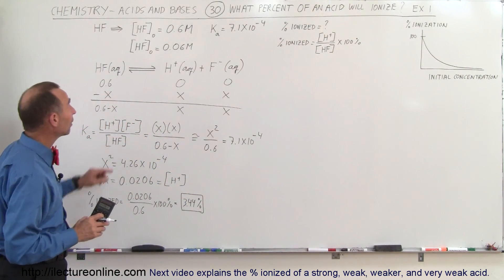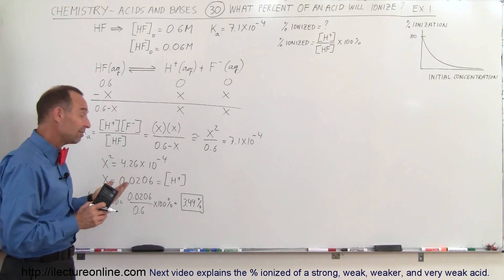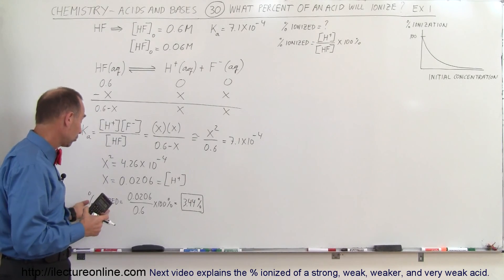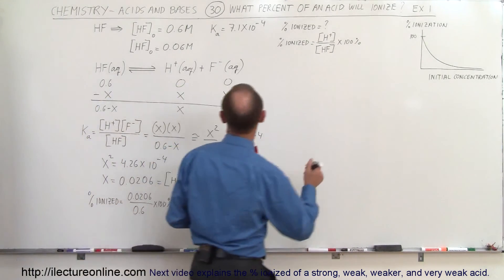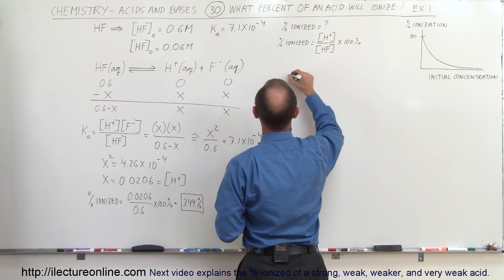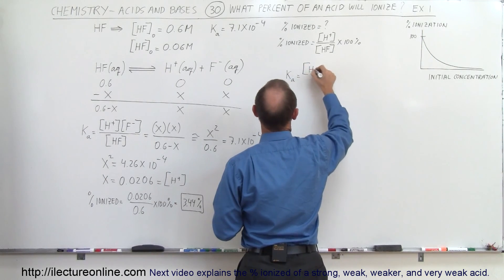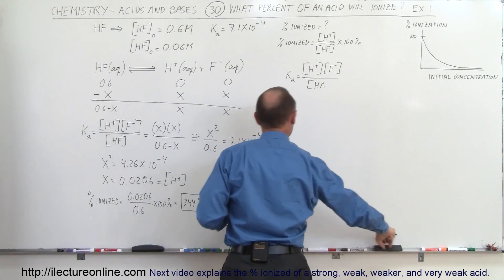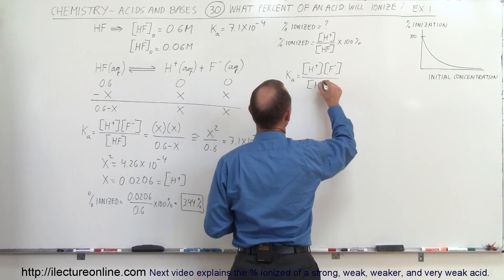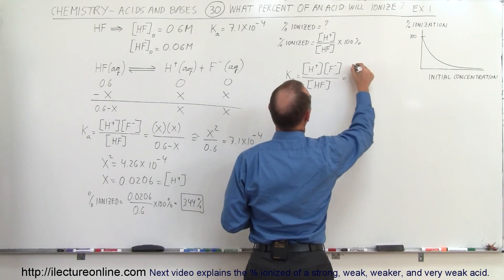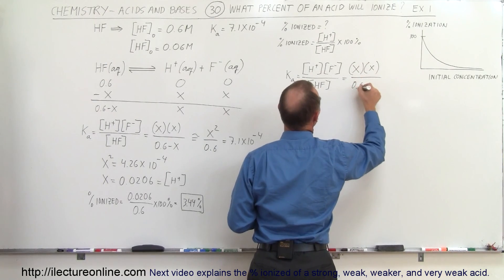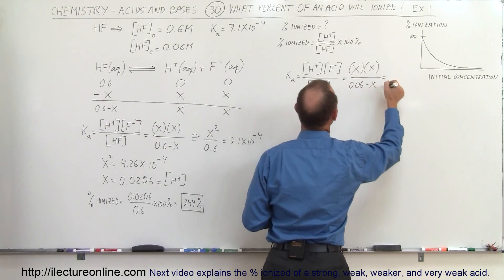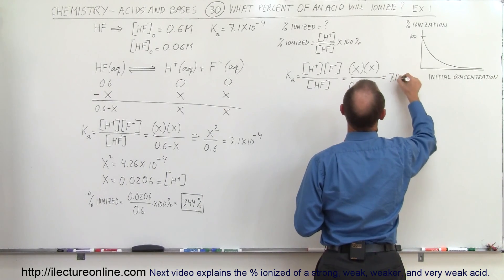Now let's do the very same problem again, but now let's start off with a smaller concentration of the acid. We expect a larger percentage ionization. So Ka equals x times x divided by 0.06 minus x — this is hydrofluoric acid HF — and that equals Ka, which is 7.1 times 10 to the minus 4. The initial concentration is now 0.06 molar.